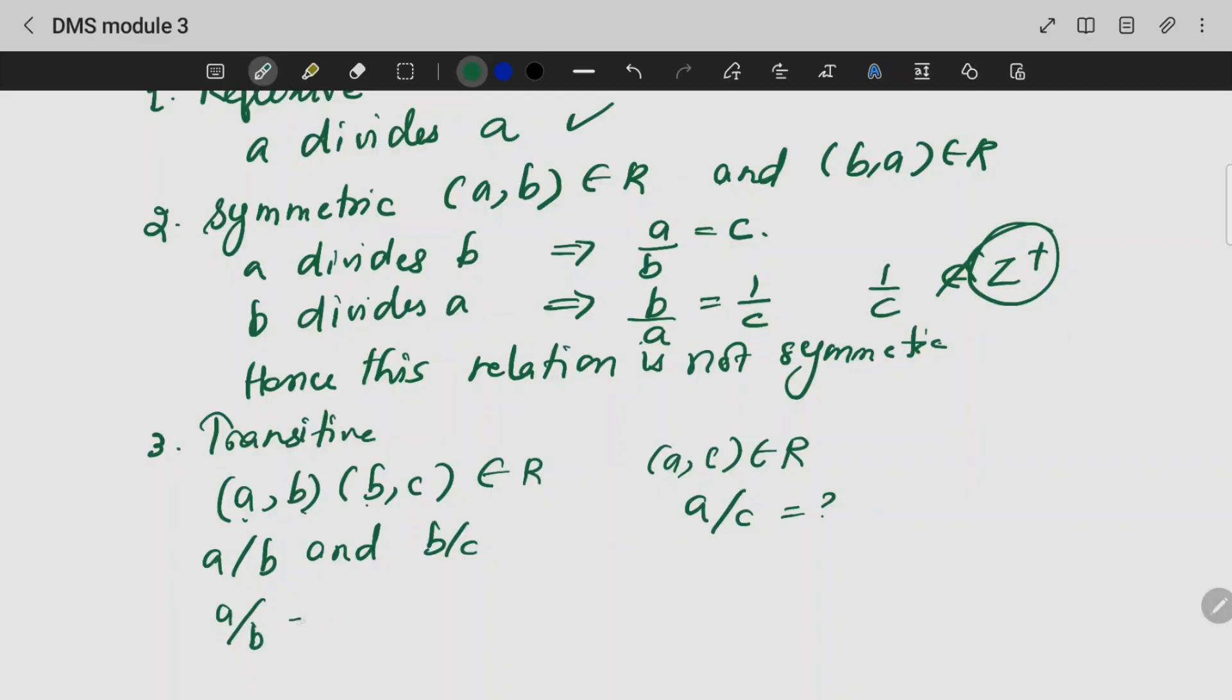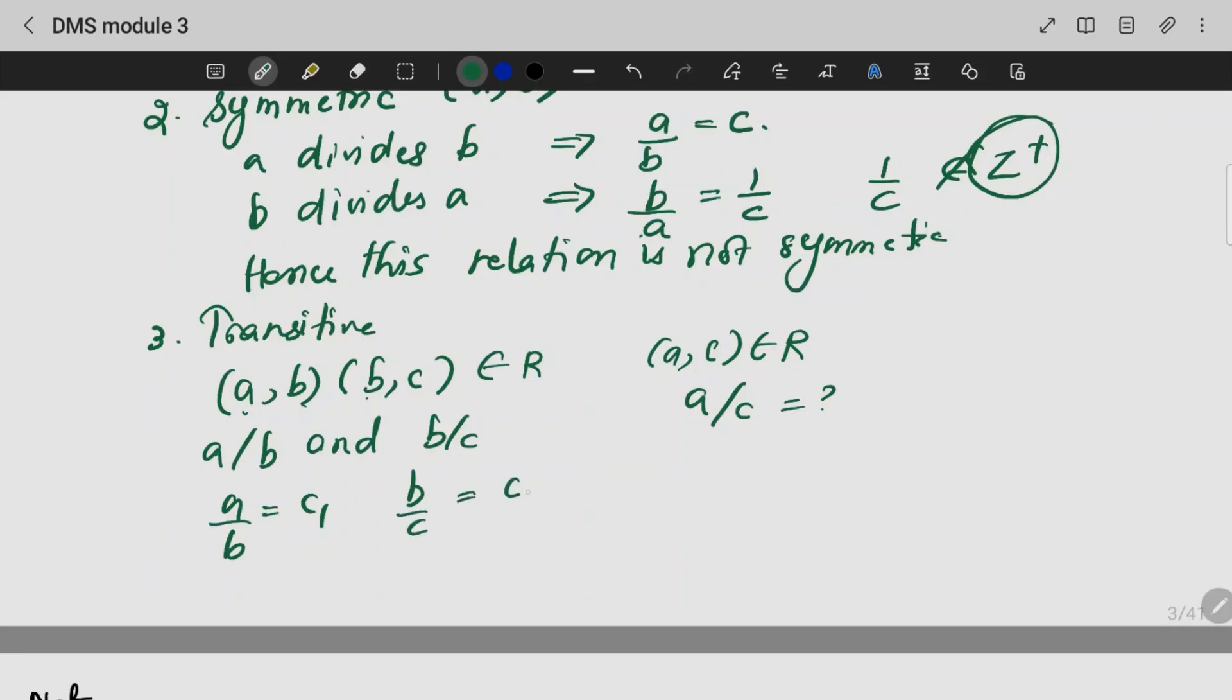a divided by b equals c1, b divided by c equals c2. a by b into b by c equals c1 into c2. b cancels. So a by c equals a constant c1 into c2, which is again a constant.